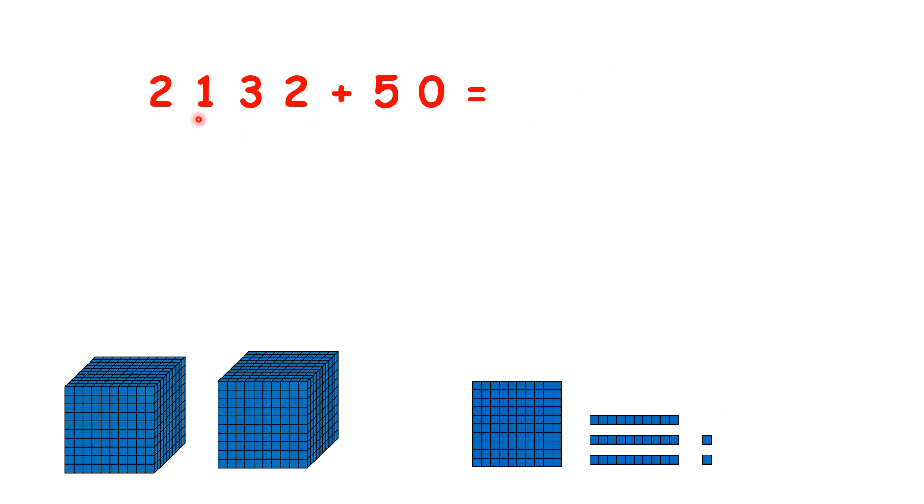So what is 2,132 plus 50? We have 3 tens, we want to add 5 tens. So let's add 1, 2, 3, 4, 5 tens. And that makes 2,182 because we now have 8 tens.